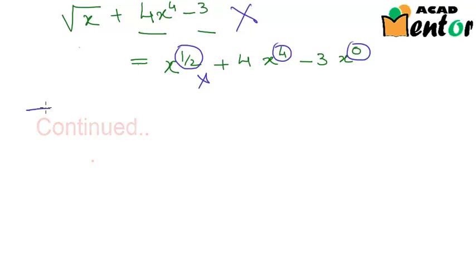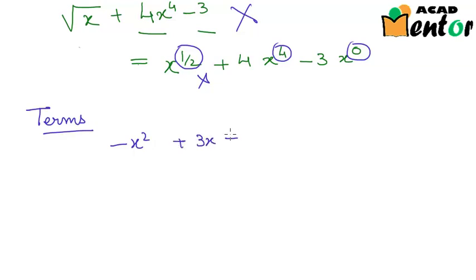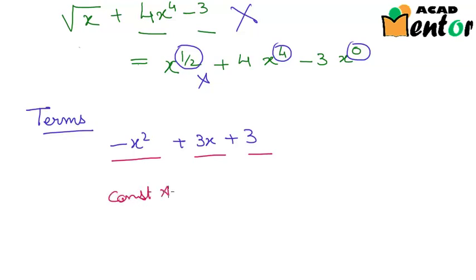Let's look at what we mean by terms of a polynomial. If we have a polynomial, for example negative x squared plus 3x plus 3, then negative x squared is a term, plus 3x is a term, and plus 3 is another term. A term is nothing but a constant multiplied with a variable raised to some power — the variable is raised to an exponent. This forms a term of a polynomial.